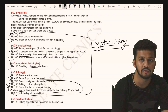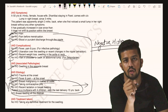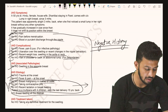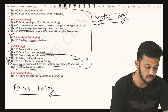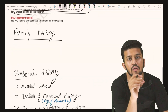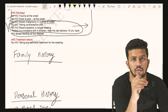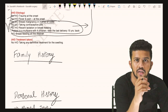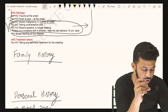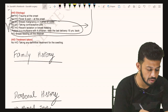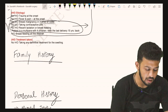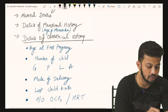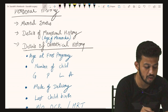Family history is very important — we must ask about the patient's mother or grandmother's history of breast carcinoma or any condition that could cause breast carcinoma. Regarding personal history, we ask about marital status, details of the menstrual cycle, and importantly the age of menarche.